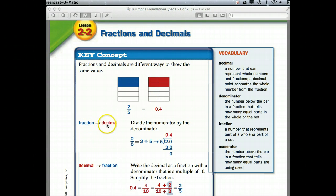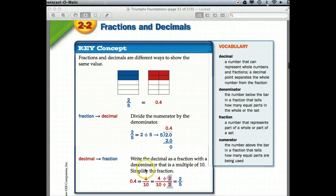To move a fraction to a decimal, we divide the numerator by the denominator. Do you know which number is the numerator? It's the number on the top. And we're going to divide it by the denominator, the number on the bottom. So 2 is the numerator, 5 is the denominator. To change a decimal to a fraction, we write the decimal as a fraction with a denominator that is a multiple of 10. Notice how we read 4 tenths? It's the same thing as 4 over 10.